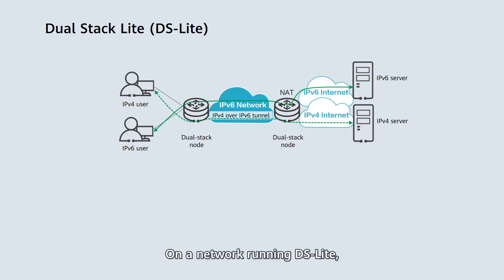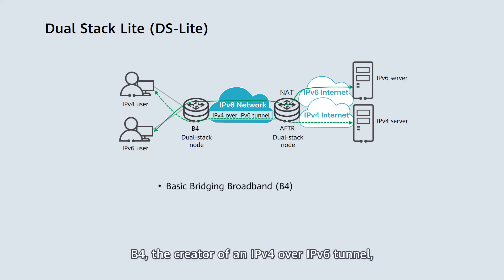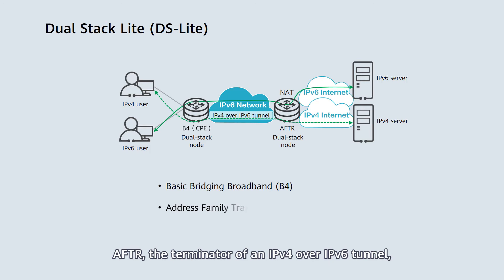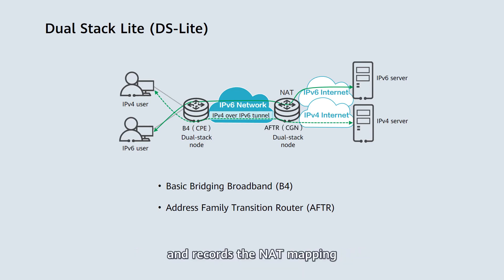On a network running DS-Lite, two new roles are introduced: B4 and AFTR. Both roles support dual stack. B4, the creator of an IPv4-over-IPv6 tunnel, is usually implemented on CPEs. AFTR, the terminator of an IPv4-over-IPv6 tunnel, is usually deployed on CGN devices. It decapsulates IP packets, performs NAT, and records NAT mapping.